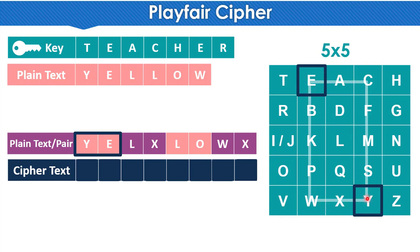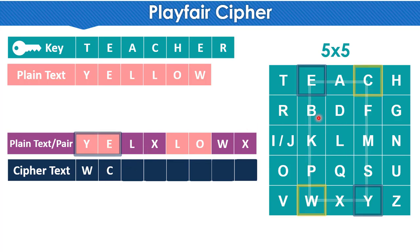Using the rectangle rule: Y and E form the corners of a rectangle. The encryption takes the opposite corners of the rectangle. So for Y, the opposite corner gives W, and for E the opposite corner gives the corresponding letter. This is the rectangle encryption rule.